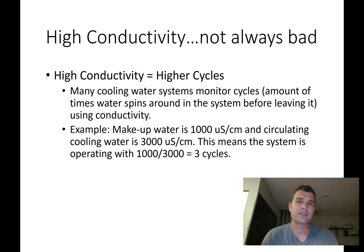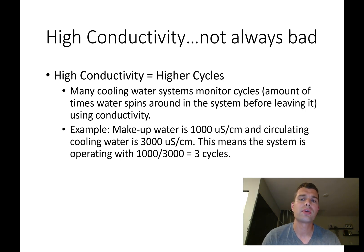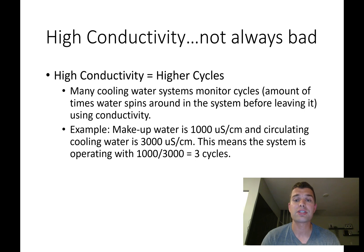High conductivity is not always bad — it's not the same as hardness. Typically, high conductivity means higher cycles of concentration in your cooling water system. Cooling water systems monitor cycles, which is how many times water circulates before leaving through evaporation or blowdown, and conductivity is used to measure that. For example, if your makeup water is 1,000 micro Siemens per centimeter and your circulating cooling water is at 3,000 micro Siemens per centimeter, the system is operating at three cycles.